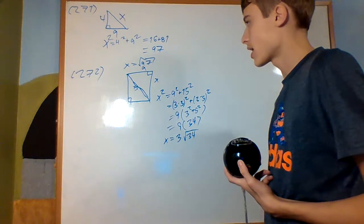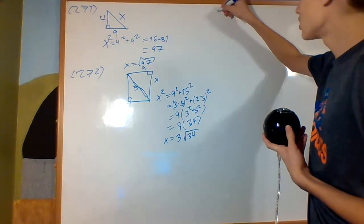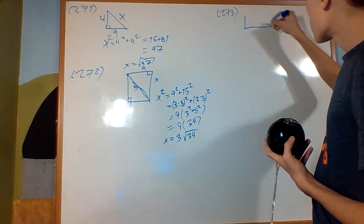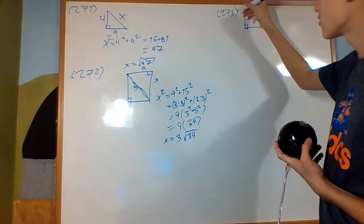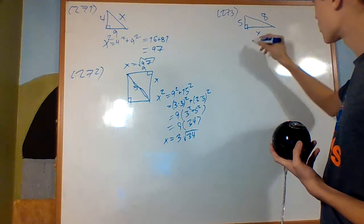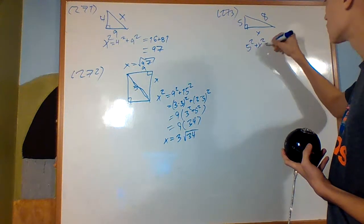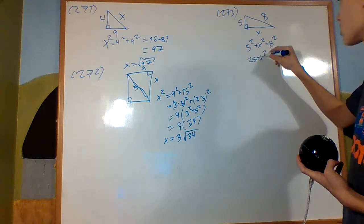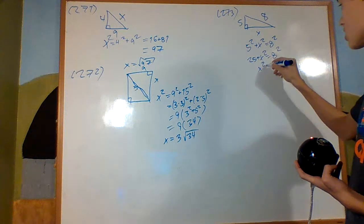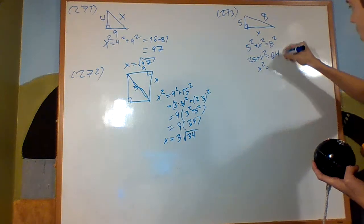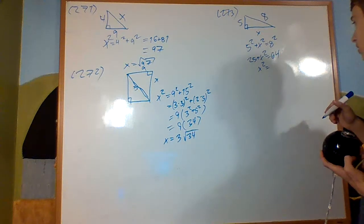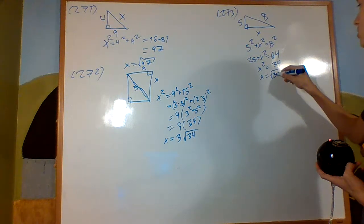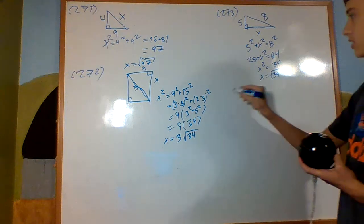Problem 273: a right triangle with sides 5 and 8. Same principle — 5 squared plus X squared equals 8 squared, so 25 plus X squared equals 64, meaning X squared equals 39. X is the square root of 39, which can't be simplified.